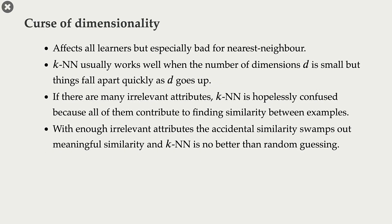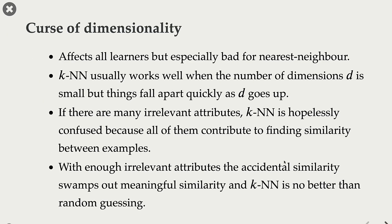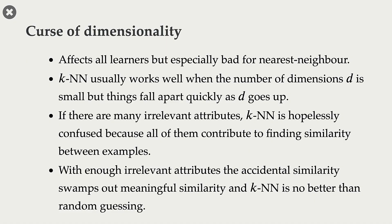Last week we talked about the most important problem in machine learning, which is overfitting. The second most important problem in machine learning is the curse of dimensionality. This problem affects all learners, but it's especially bad for nearest neighbor. In decision trees, we pick the most informative feature at each step, and if there are irrelevant features, the algorithm just won't pick those features. But in case of KNNs, that doesn't happen — all features have equal importance, and all of them contribute when we calculate distances between examples.